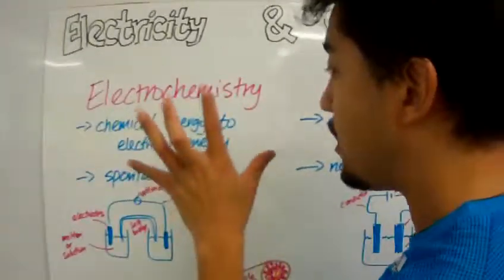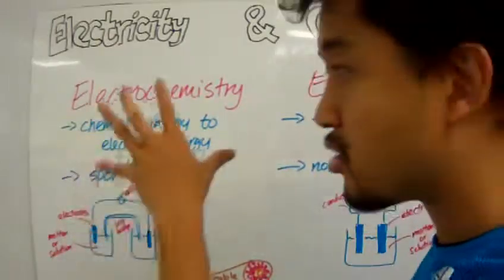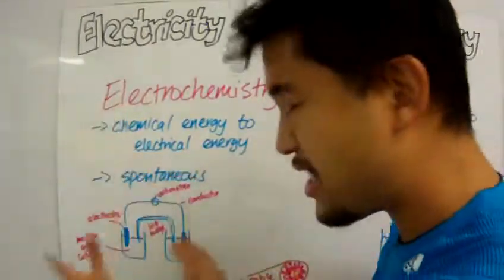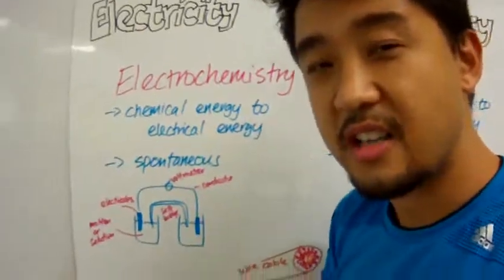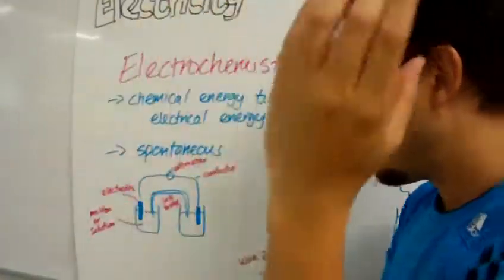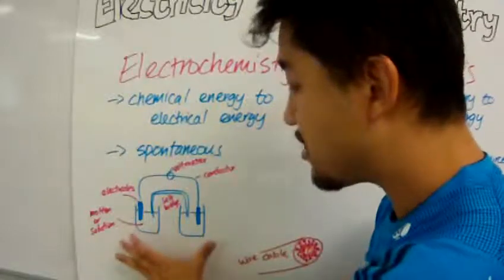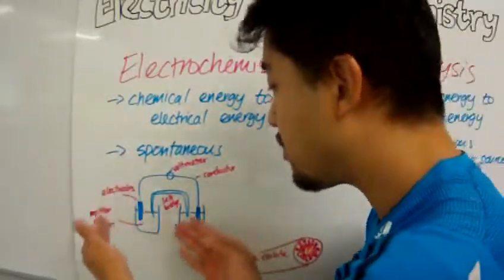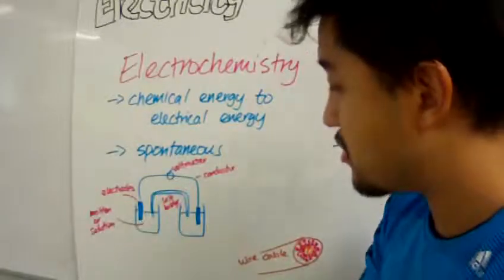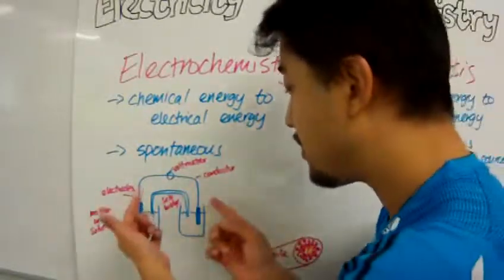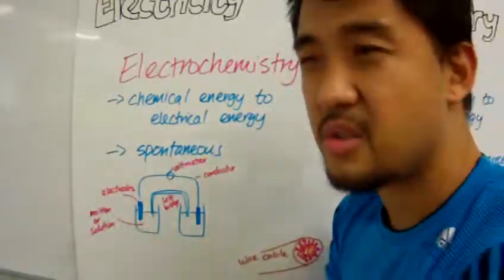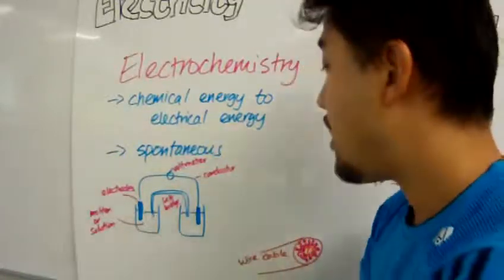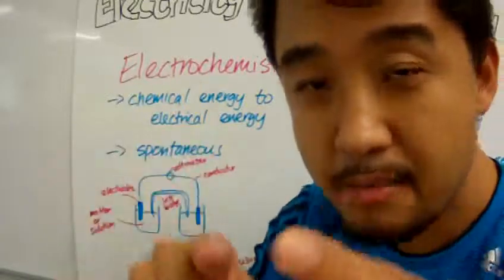So in an electrochemical cell, what you have, you see online when you do your research, is a typical cell. You have two beakers filled with molten liquid solution of some sort, and you have electrodes. These electrodes can be platinum and copper, usually carbon in the classroom.